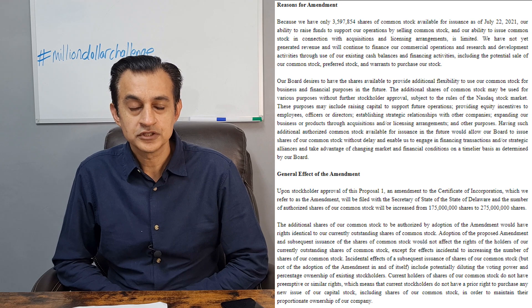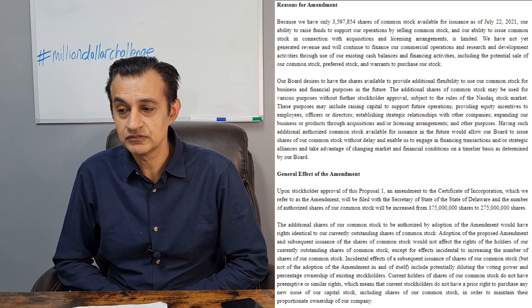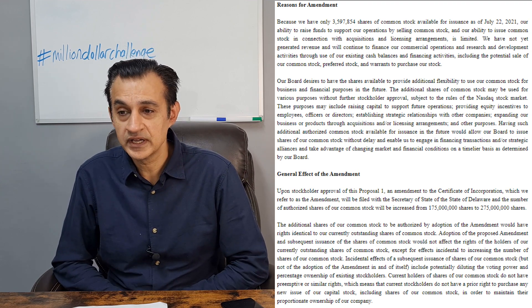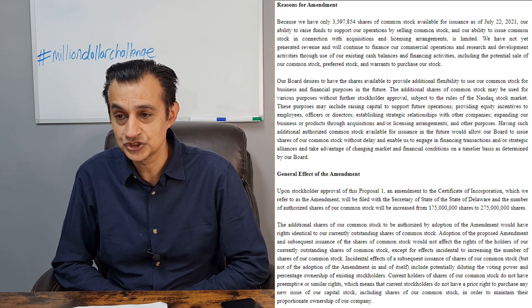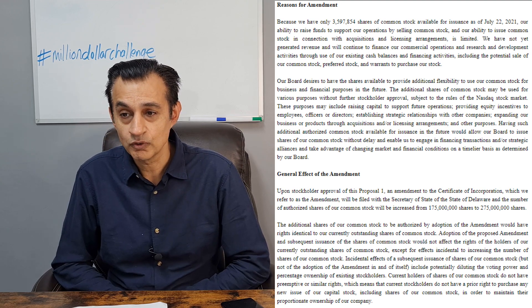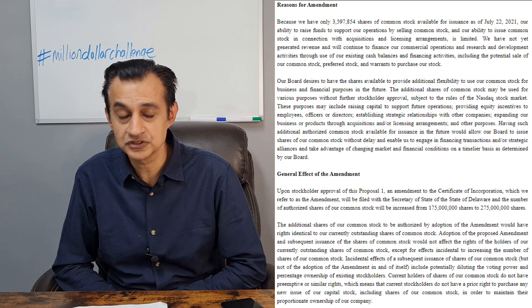What I'd now like to do is draw your attention to the second page, where the headline is 'Reason for Amendment.' I'd like to summarize why the company has taken this step. First, they currently have just in excess of 3.5 million shares of common stock available as of July 22nd, 2021. That is causing the business a problem in terms of raising funds to support their operations.